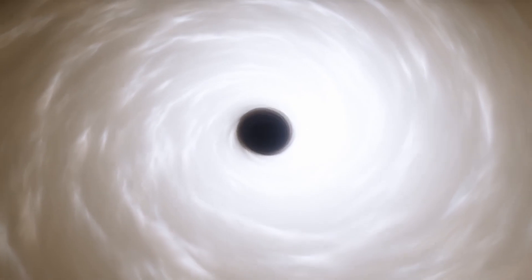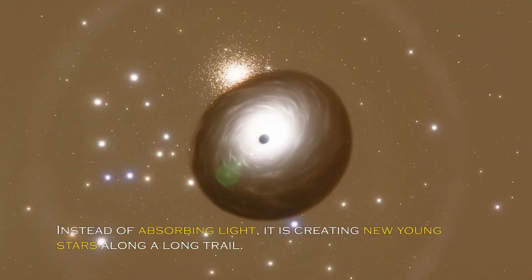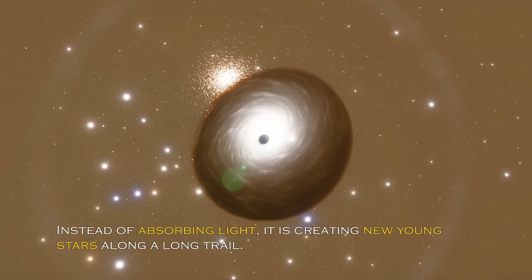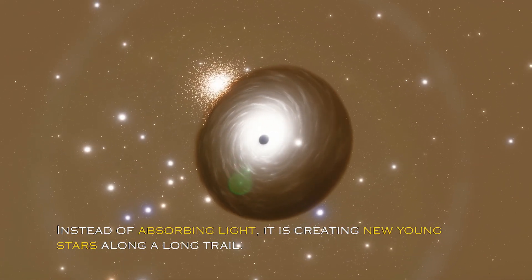Black holes are generally thought of as huge entities that pull everything including light towards them. But the recently observed black hole appears to be having the opposite effect. Instead of absorbing light, it is creating new young stars along a long trail.